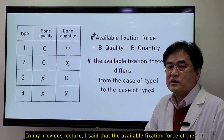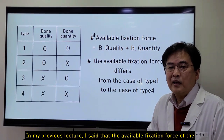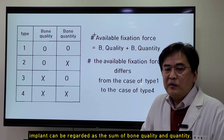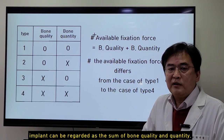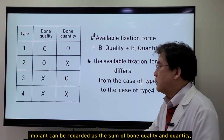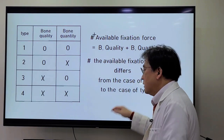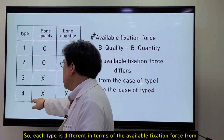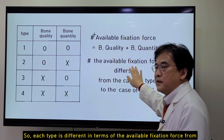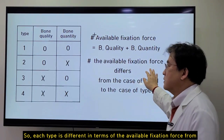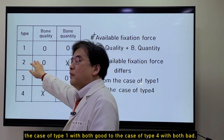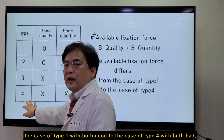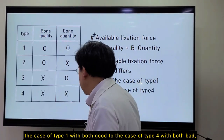In my previous lecture, I said the available fixation force of the implant can be divided as the sum of bone quality and quantity. So each type is different in terms of the available fixation force, from the case of type 1 with both good to the case of type 4 with both bad.